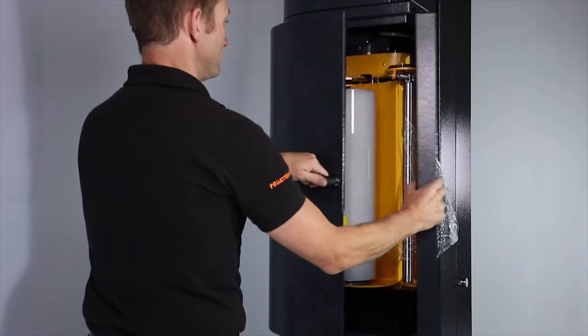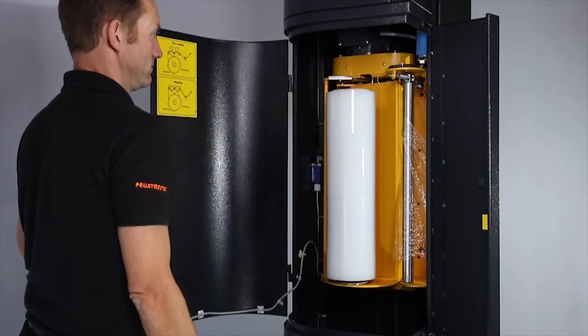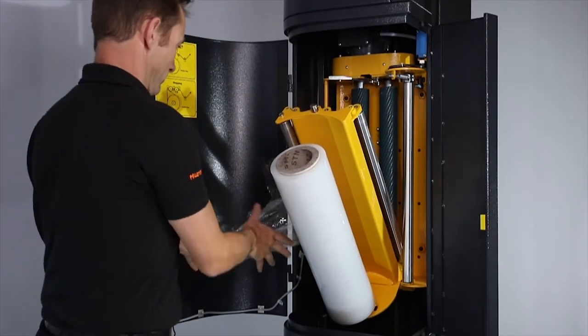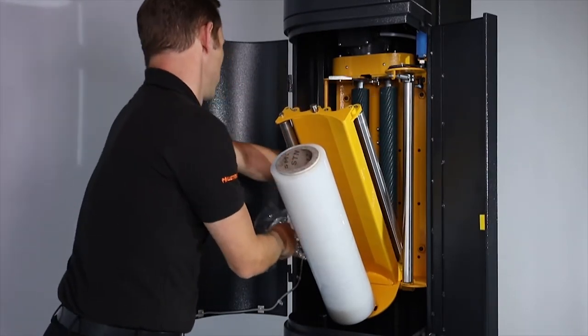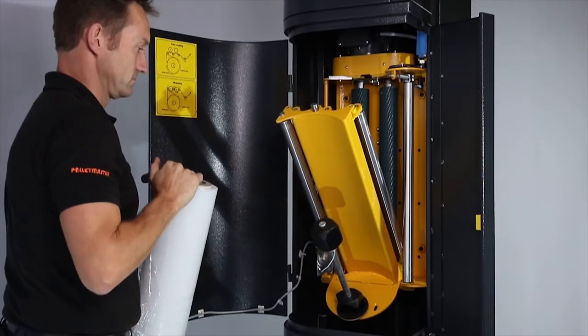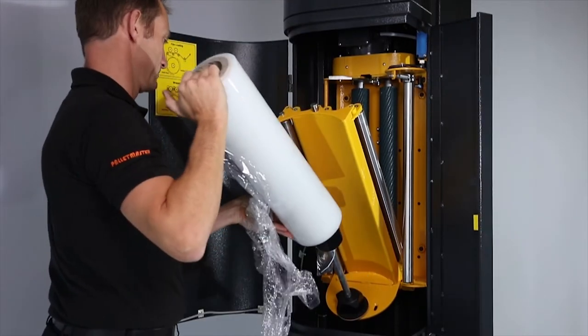The internal film carriage keeps the operator safe, stops the film getting damaged, and avoids any operational pinch points. The film carriage is a simple, easy-load design and is accessed via an interlocked door. When the door is opened, the machine will power down for safety.